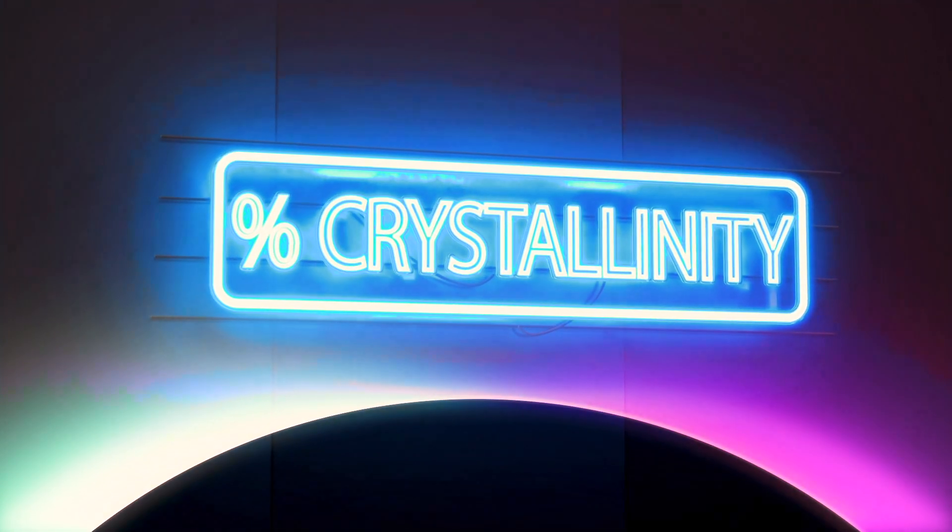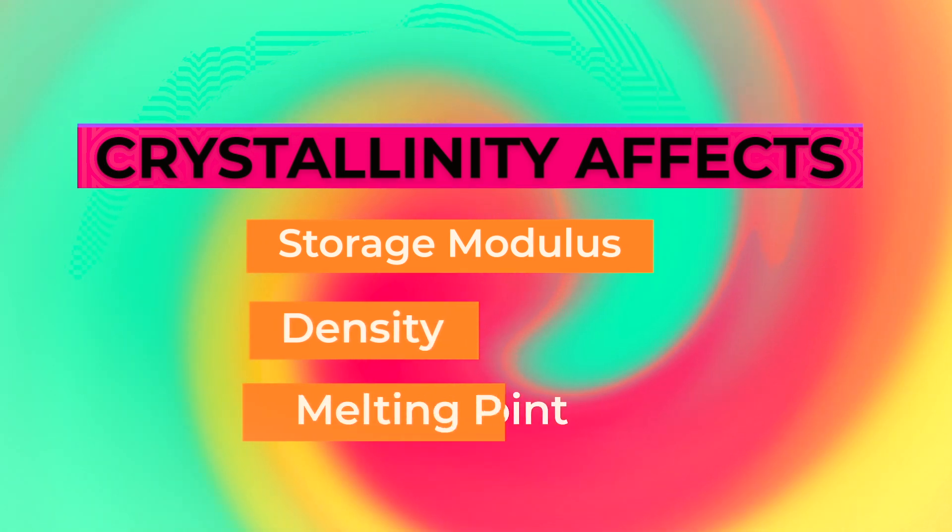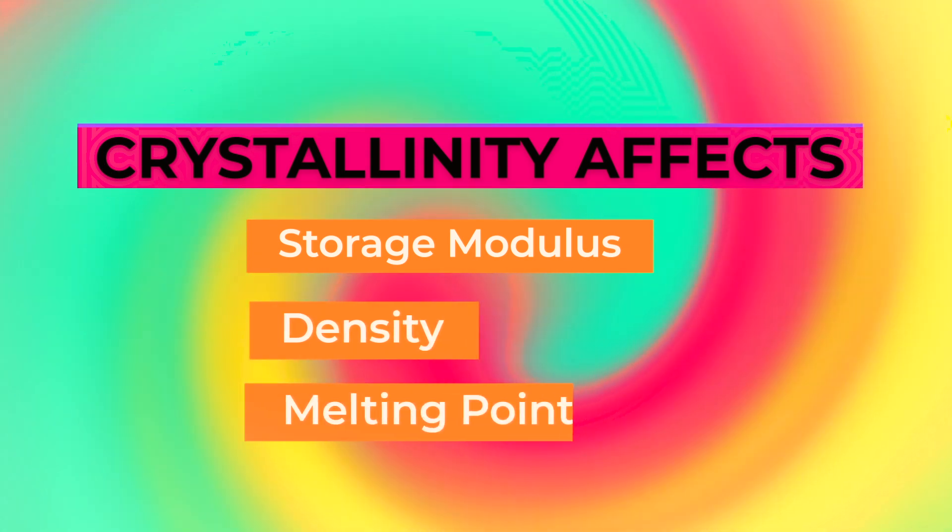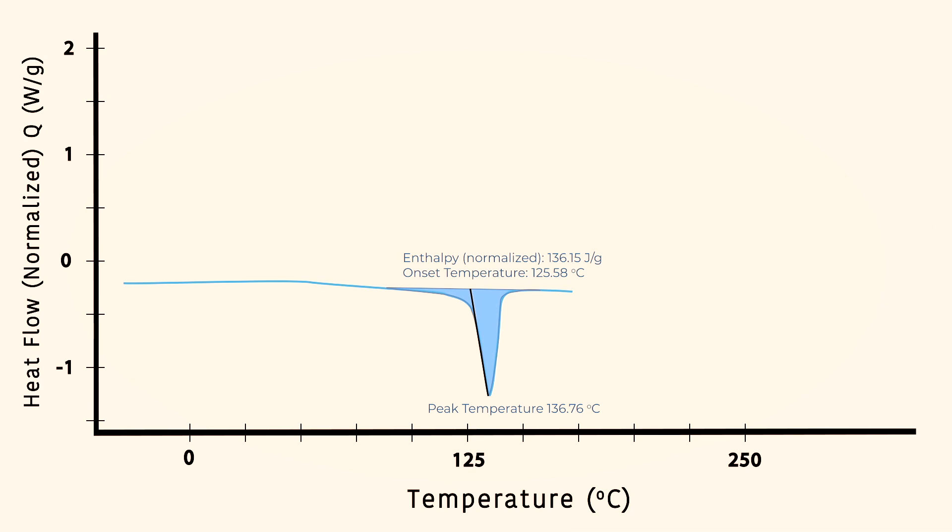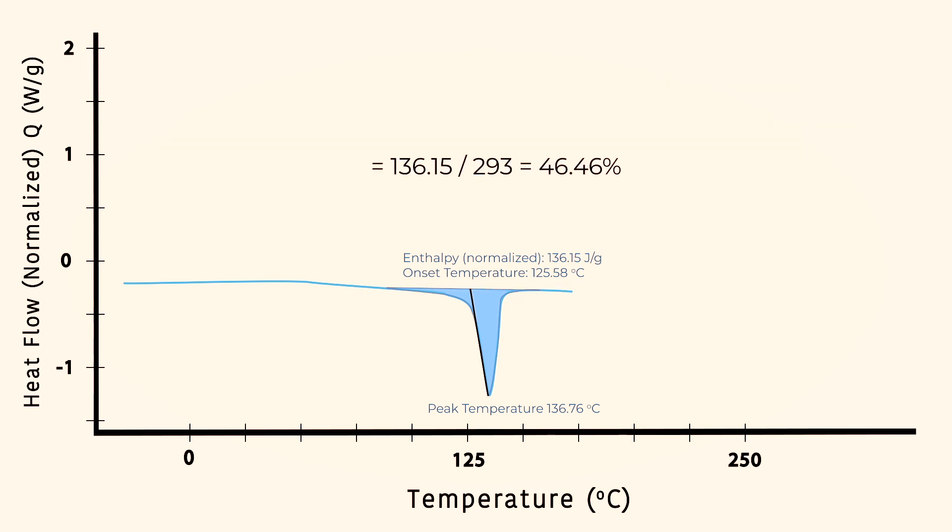The next useful information that we can get from polymers is the percentage crystallinity. Most crystalline polymers are not entirely crystalline. They have amorphous regions where there is no order in their structure. Crystallinity is important because it affects other properties like the storage modulus, density, and melting point. This is obtained by calculating the normalized heat of fusion and comparing this with a 100% crystalline sample of the same polymer. A 100% crystalline polymer is hard to come by and hence we will have to resort to published data.